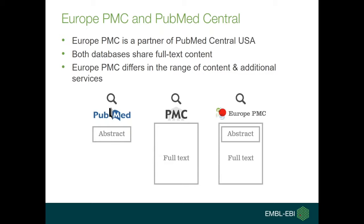We have additional content like preprints and patents in comparison to PubMed. But what differentiates us from PubMed Central is that we also offer additional services on top of the literature data. You can see the annotation platform as one of the main additional services that we offer.